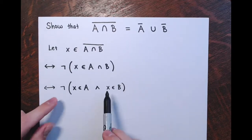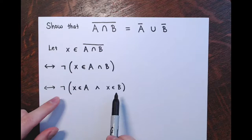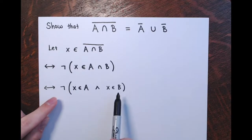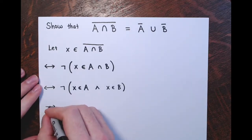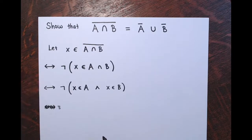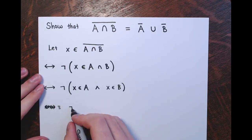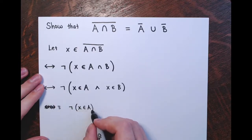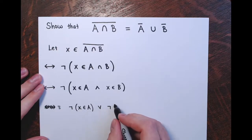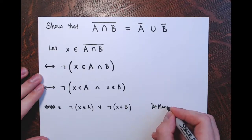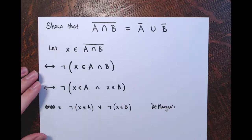What I have here now is something I can apply DeMorgan's Law to. This is the negation of an and statement, so this is logically equivalent to — the negation of X belongs to A, or the negation of X belongs to B. I should also be writing reasons for all this, but this is where I just used DeMorgan's Law.